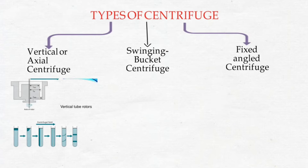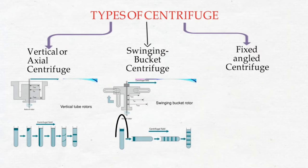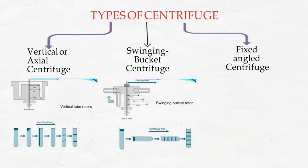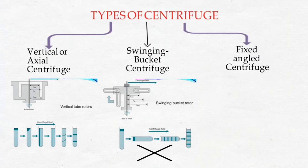In the swinging bucket centrifuge, the tubes are in a vertical position when the centrifuge is at rest and assume a horizontal position when operating. The longer distance of travel allows better separation, so it is mainly used for density gradient centrifugation. A speed of more than 5,000 RPM is not practical in this type.